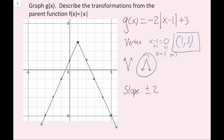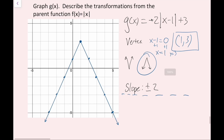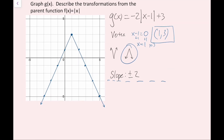The last step is to describe the transformations from the parent function. If we treat this like we're in vertex form — and this actually is in vertex form — it's really easy to describe the transformations. Vertex form is y equals a times the absolute value of x minus h, plus k, where h is the x value of the vertex and k is the y value of the vertex. The first thing I want to do is describe the a value.